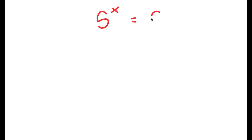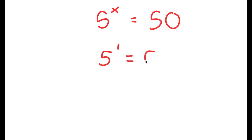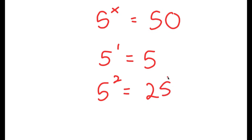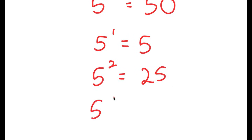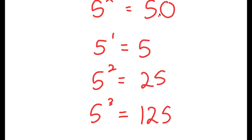In this video, I'm going to be solving the equation 5 to the power of x is equal to 50. To start, let's test different values of x. If x is 1, then I get 5 to the power of 1, which is equal to 5 — too low. If x equals 2, I get 5 to the power of 2, which is 25 — again too low. If x equals 3, then I have 5 to the power of 3, which is 125 — way too high. So we know the value of x is going to be somewhere in between 2 and 3, meaning it's going to be a decimal.